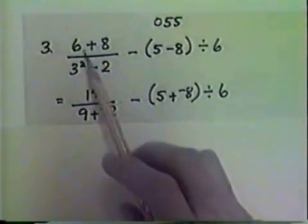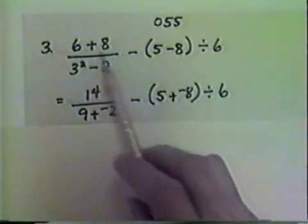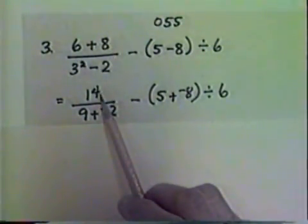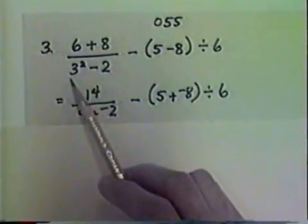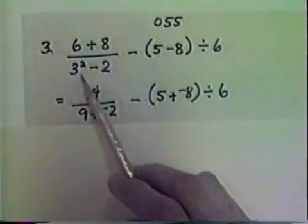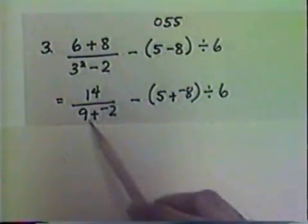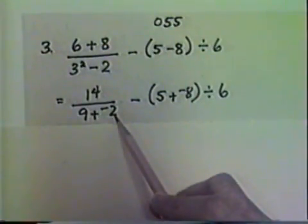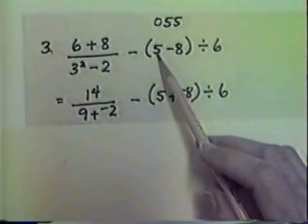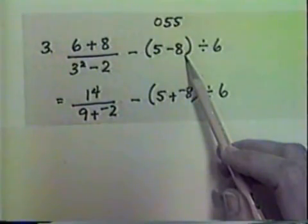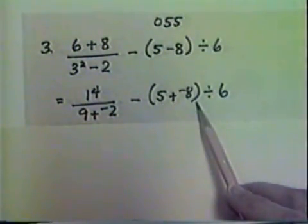So what have we done? We've worked inside this symbol of inclusion, the 6 plus 8, to get 14. We've worked inside the next symbol of inclusion, 3 squared subtract 2, to get 9 add negative 2. And we've worked within the last symbol of inclusion, 5 subtract 8, to get 5 add negative 8.